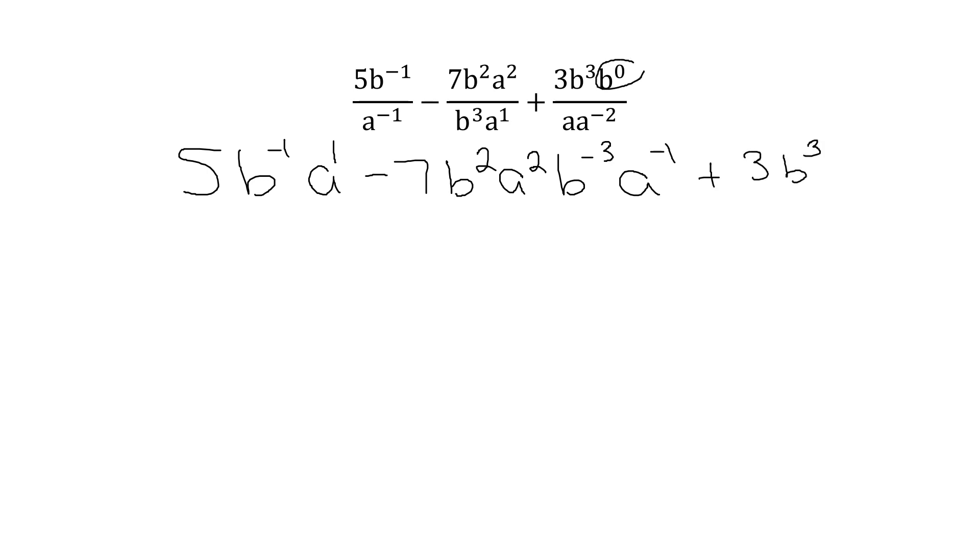Remember when I'm not moving, it doesn't change. So those things that are already on the top don't change. Now this, remember anything to the 0 exponent becomes 1. And because I'm multiplying these numbers 3 times 1, it doesn't change anything. So technically, you can just sort of eliminate that.